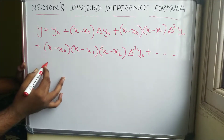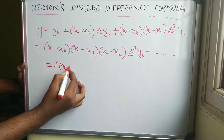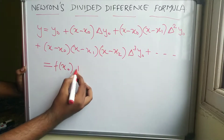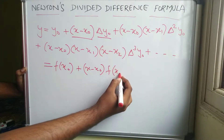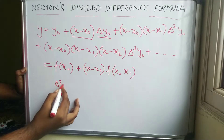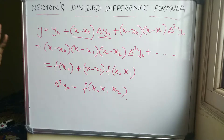In some textbooks, y₀ is written as f(x₀), and Δy₀ terms are written using function notation such as f(x₀, x₁) and f(x₁, x₂). So basically this formula is used when the intervals are not equal — for unequal intervals.